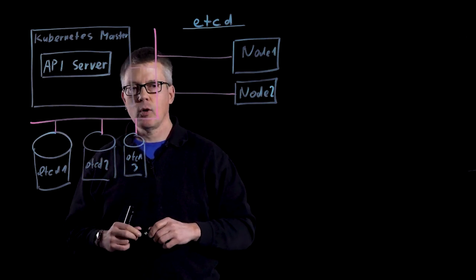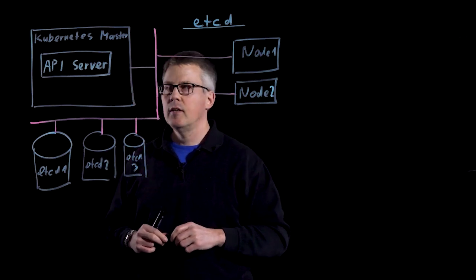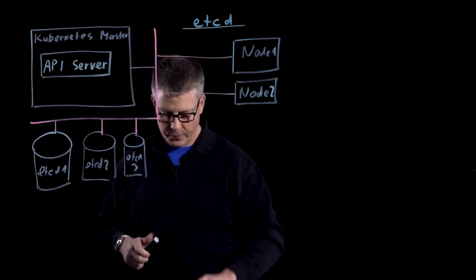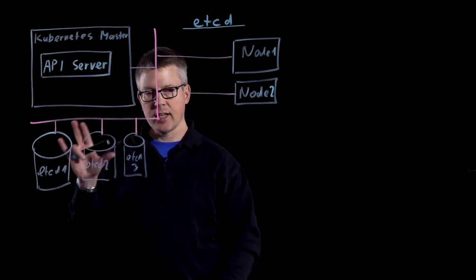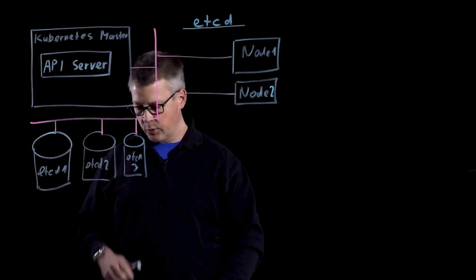The API server is the only component in Kubernetes which actually talks to the etcd cluster, and there we save the intended state of the objects you want to create.